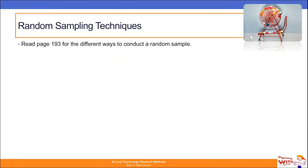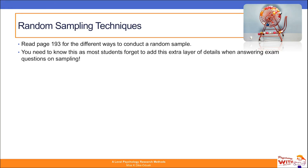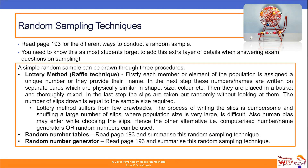When it comes to random sampling there are a number of techniques which psychologists and students can use, and it's really important that you know this because this is an area where students often struggle. If you're asked how you would conduct a random sample you need to give detail — not just a basic answer like 'I'd randomly select.' Please open page 193 in your textbook and read the portion on random sampling techniques.